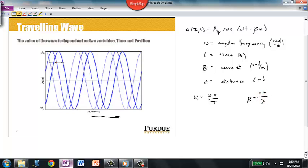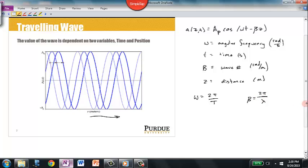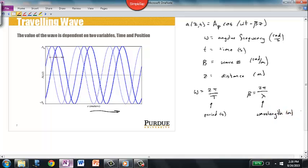So here we have T is the period, measured in seconds, and lambda is the wavelength, measured in meters.